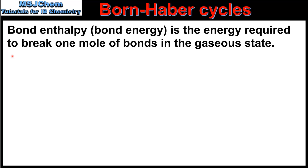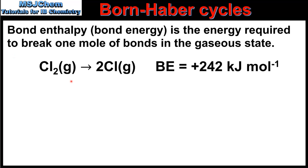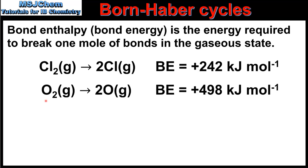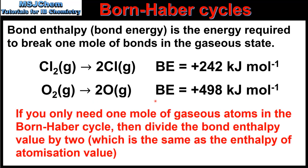Next we have bond dissociation enthalpy, or bond energy, which is the energy required to break one mole of bonds in the gaseous state. Here we have the equation for chlorine, in which one mole of gaseous chlorine molecules becomes two moles of gaseous chlorine atoms. Next we have oxygen, in which one mole of gaseous oxygen molecules becomes two moles of gaseous oxygen atoms. These values are double the enthalpy of atomization of chlorine and oxygen, because in these equations two moles of gaseous atoms are formed, whereas enthalpy of atomization only produces one mole.